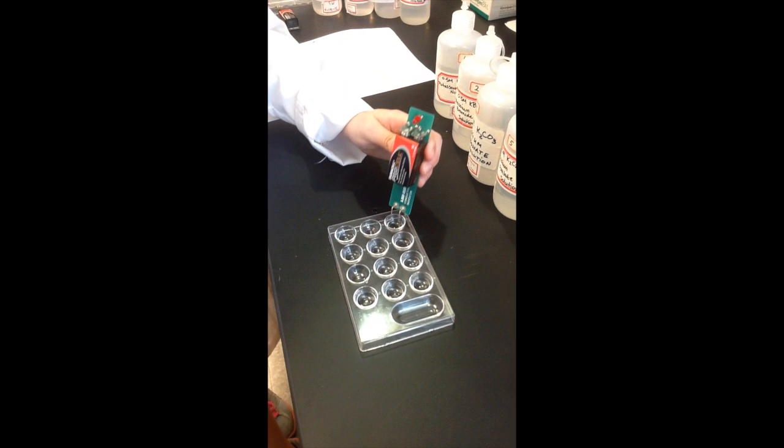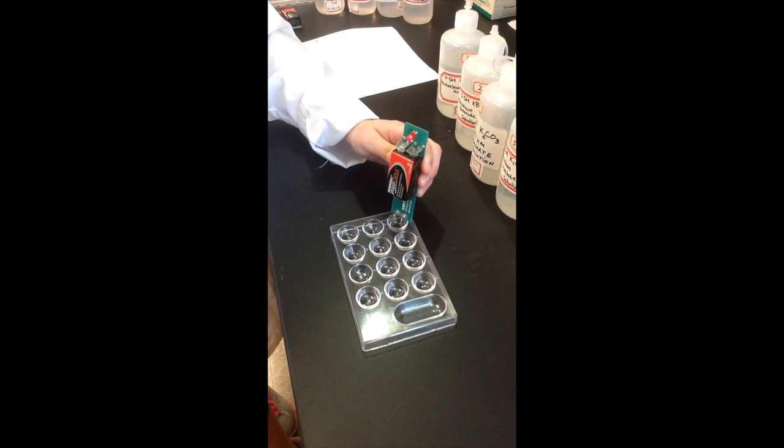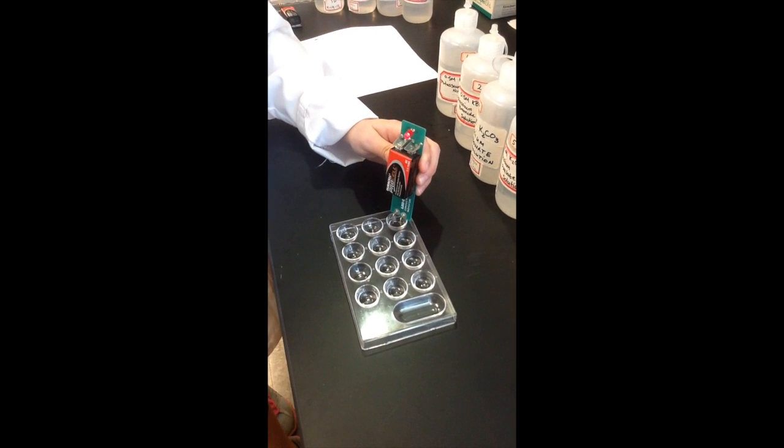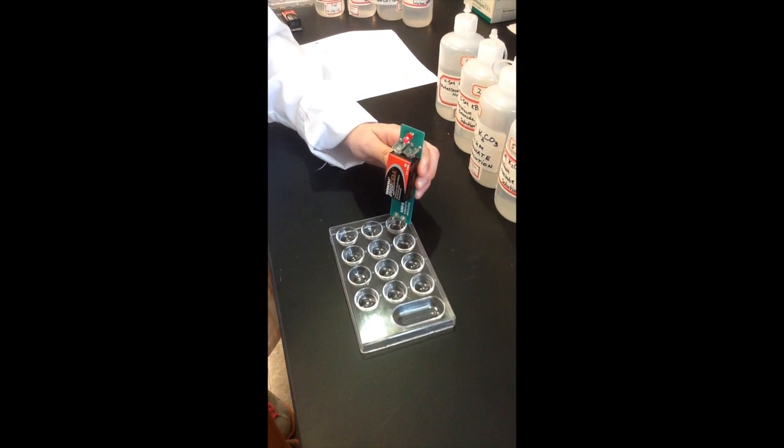Test the conductivity of each solution. If the light is blinking, then it is a strong electrolyte. If the light does not light up, then this solution is not a conductor. As you can see here, the light is blinking indicating that this is a strong electrolyte.